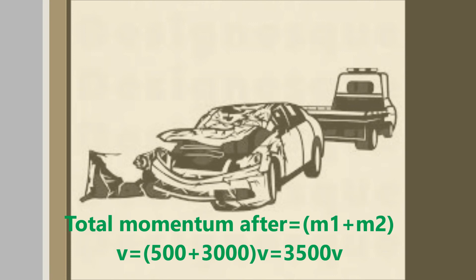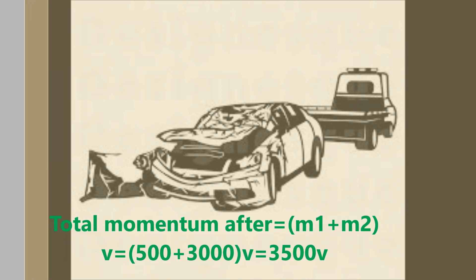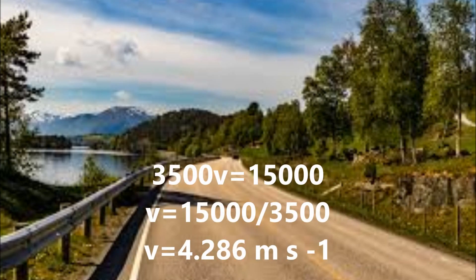Total momentum after equals (m1 + m2) times v. m1 is the mass of the car, 500 kg, plus the lorry, 3,000 kg, equal to 3,500 times v. So v equals 15,000 divided by 3,500, v equals 4.286 m per second.